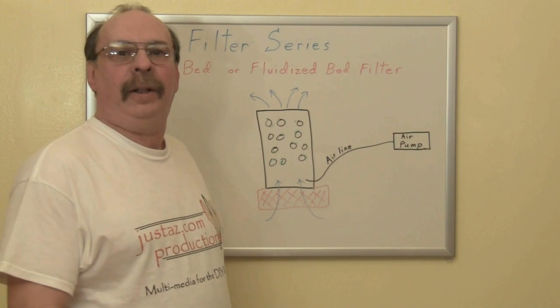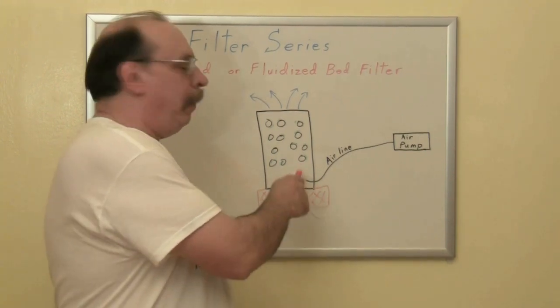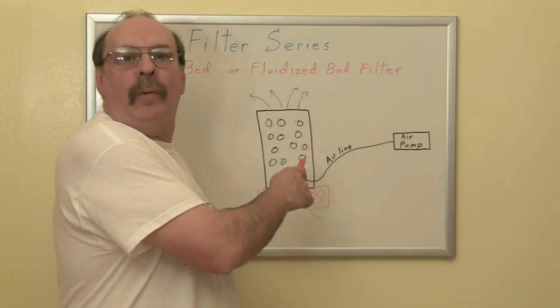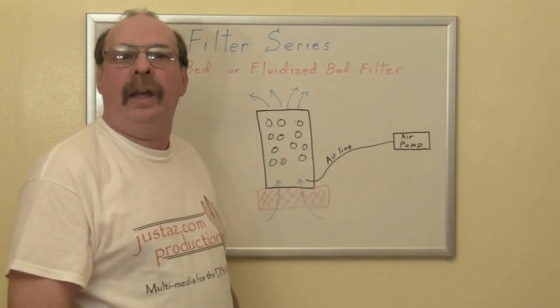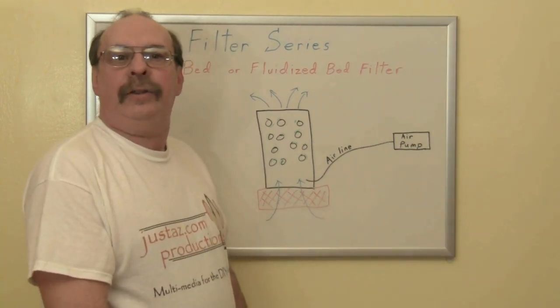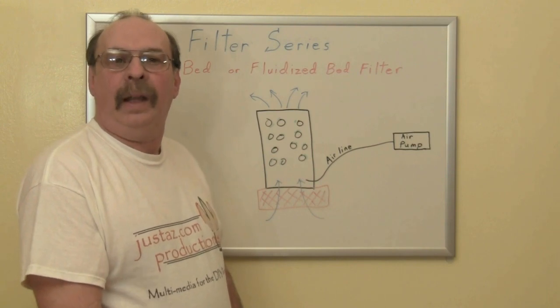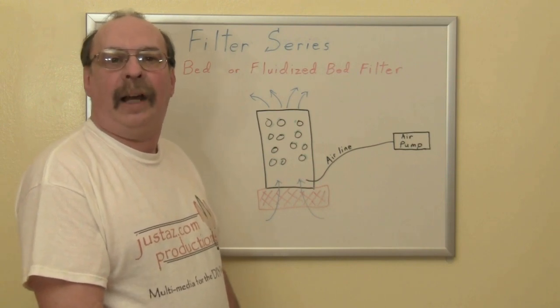The filter is simply a container with holes on the bottom for water to be drawn up into the filter and holes at the top for water and air to escape. A sponge or piece of foam is placed at the bottom. This is used to capture small bits of debris before they enter the filter. Inside the container is the biological media.